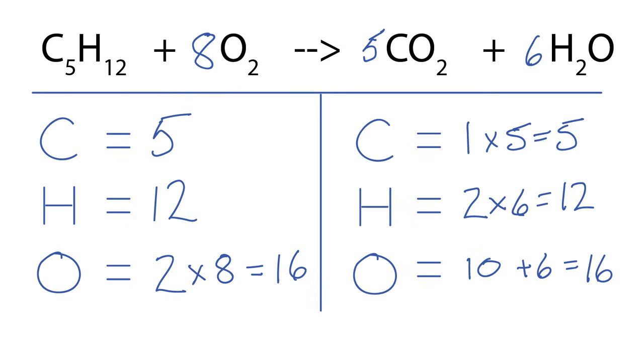We have 5 carbons on each side, 12 hydrogens, and then 16 oxygens on each side of the equation. It works best if you balance the oxygens at the end with these combustion reactions.